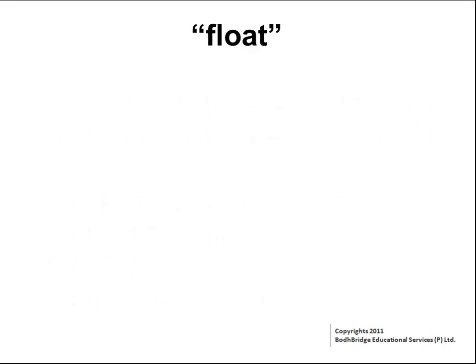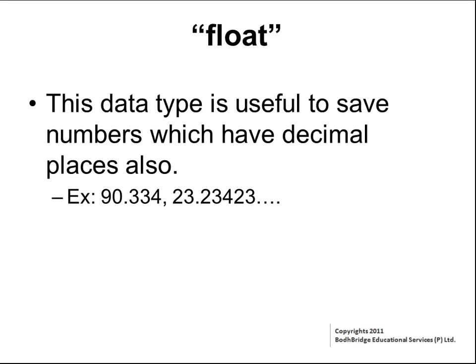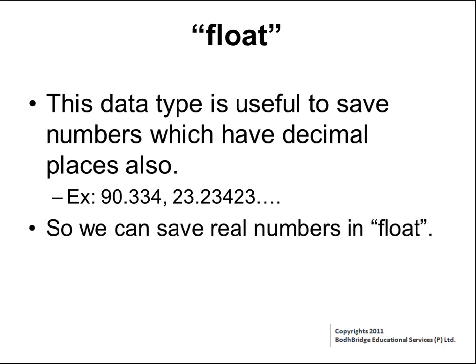Float: this data type is useful to save numbers which have decimal places. Examples are 90.334, 23.23423, etc. We can save real numbers in float data type variables, and these variables are useful to make computations on real numbers.